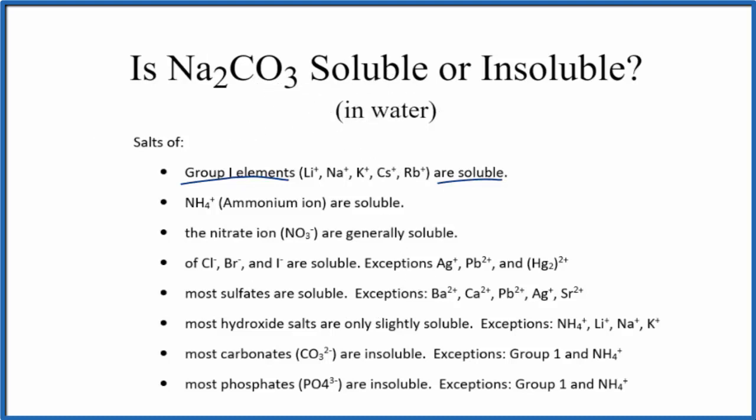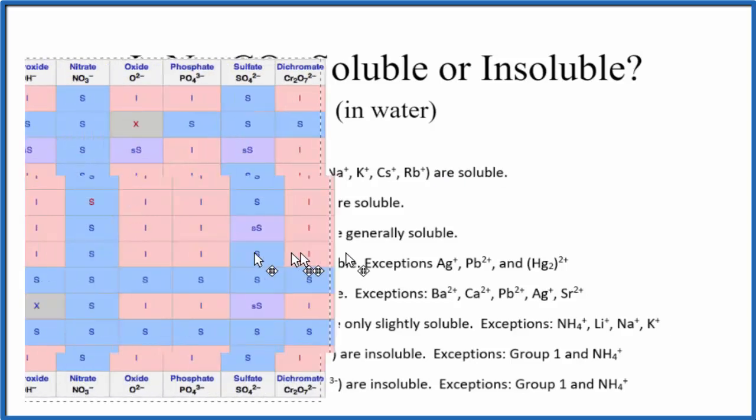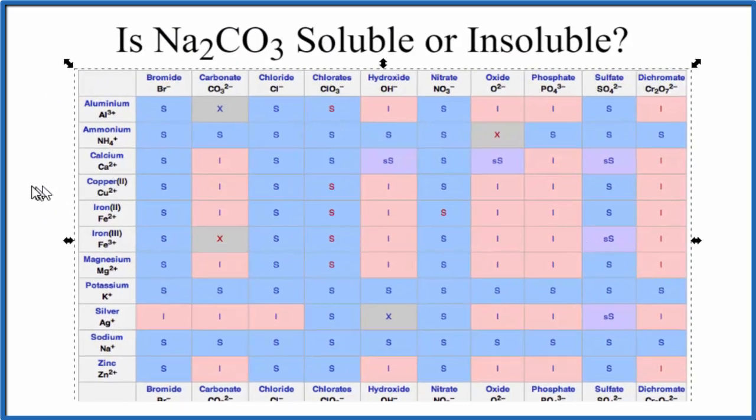We can also take a look at a solubility chart. So here's our solubility chart. Positive ions are here on the left. We'll find sodium right here, Na+.